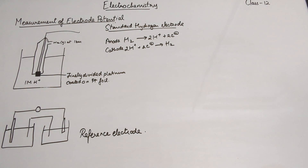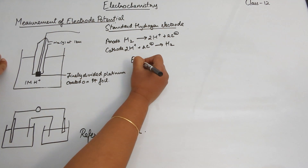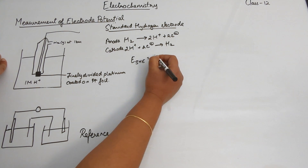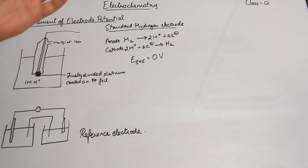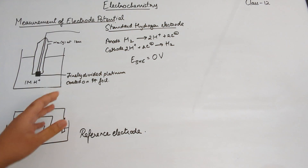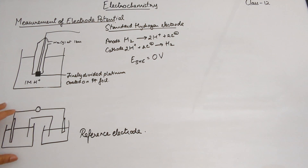Because the concentration and pressure stay constant, the electrode potential of the standard hydrogen electrode is zero — zero volts. So what we do is connect this SHE with the half cell whose electrode potential we do not know, and then we are easily able to figure out what the electrode potential of the unknown half cell is.